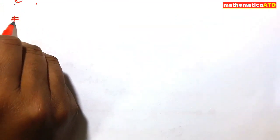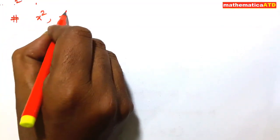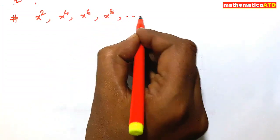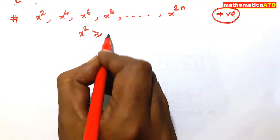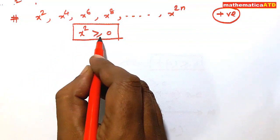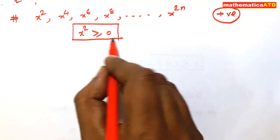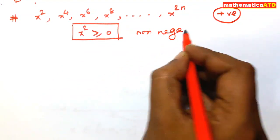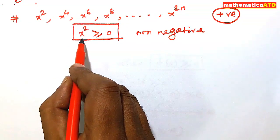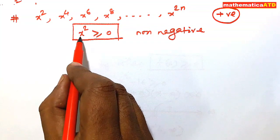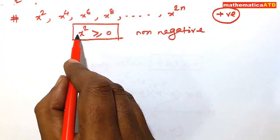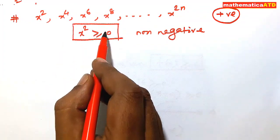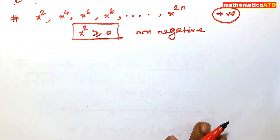The next concept: if I square something, what happens? x squared, x to the power 4, x to the power 6, x to the power 8 — all even powers — are always positive. That means x squared is greater than or equal to zero. The square of any real number is non-negative. Whether x is a negative number, positive number, or zero, squaring it gives a result greater than or equal to zero.